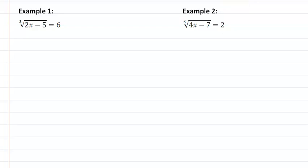So, in example 1 here, we have the cubic root of 2x minus 5 equal to 6. So, in order to solve this, we raise this to the third power. And of course, anything we do on one side of the equation, we do on the other.